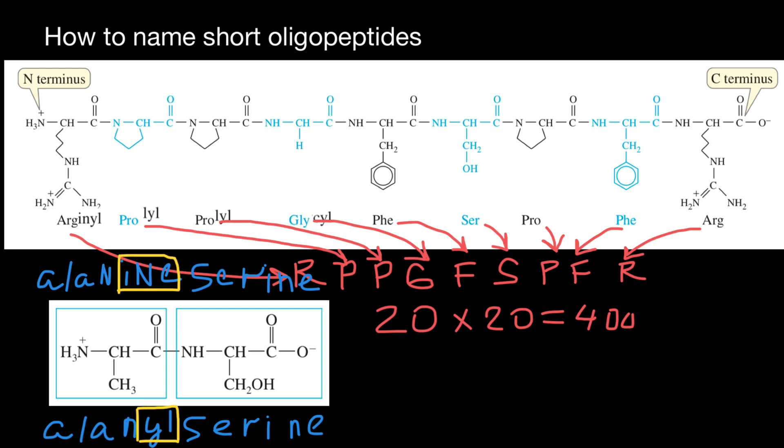And next phenylalanine is going to be phenylalanyl. And serine would be changed to seryl. So seryl. Next proline would be changed to prolyl. And phenylalanine would be changed to phenylalanyl. And as you remember, the last one doesn't change. So arginine would be just arginine because it is the last amino acid in this oligopeptide chain.